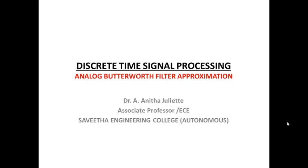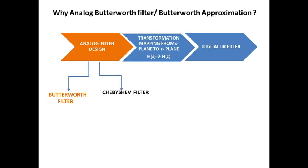Good day students. Today we will be discussing analog Butterworth filter approximation. We have seen in the previous video on frequency selective filters that in order to realize a digital IIR filter, first you need to construct an analog filter, and then map that analog filter using transformation techniques into a digital IIR filter.